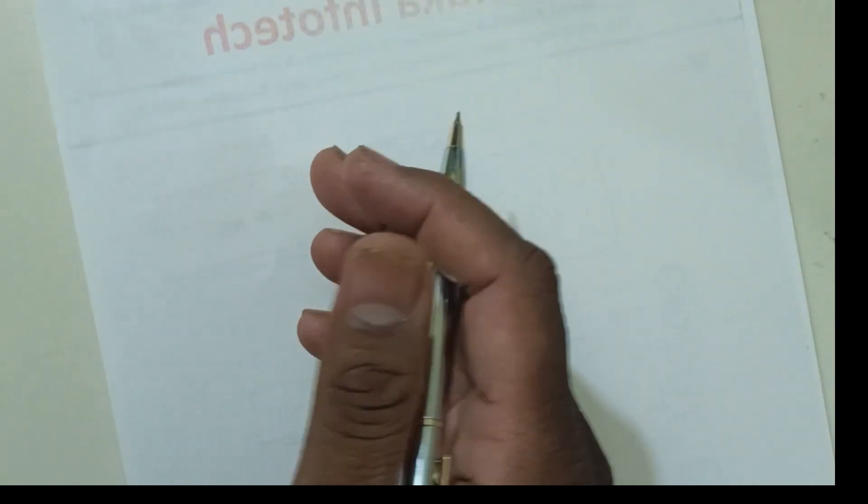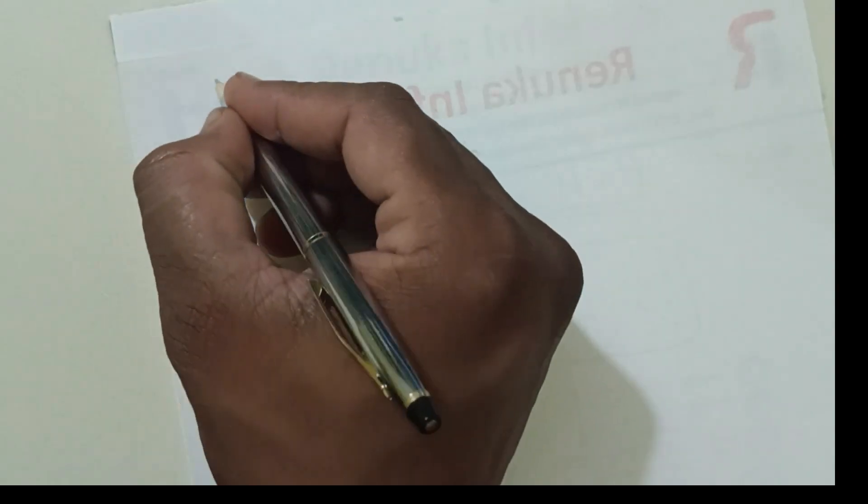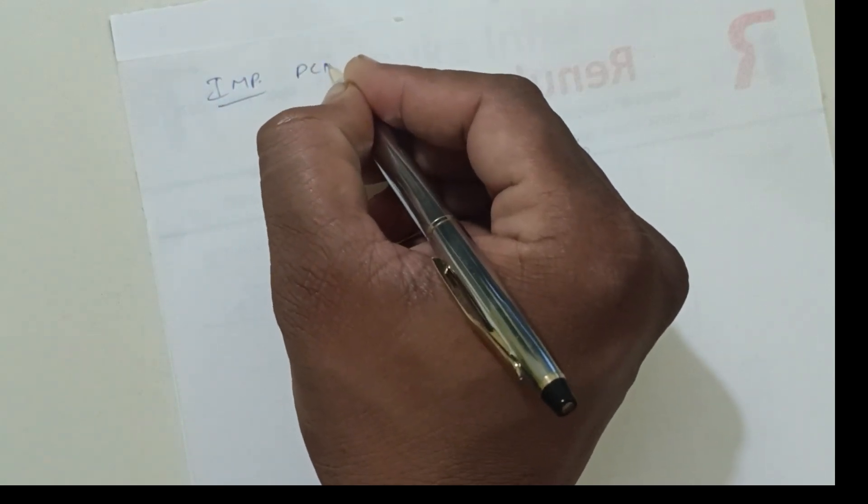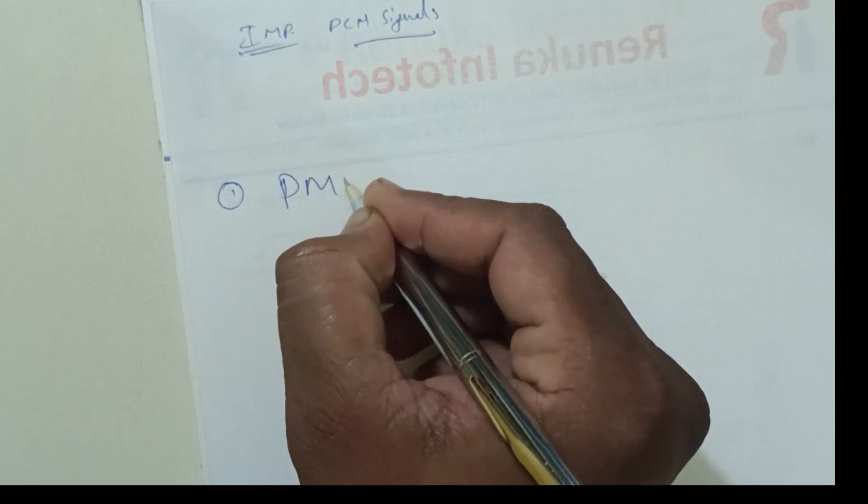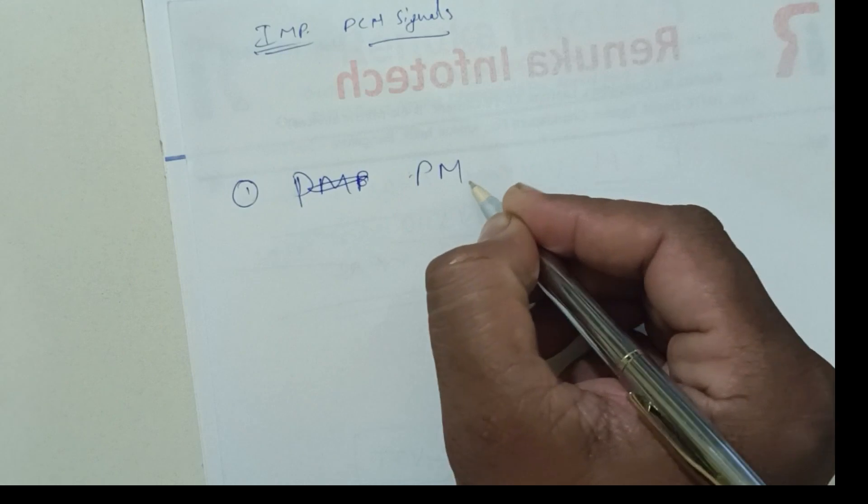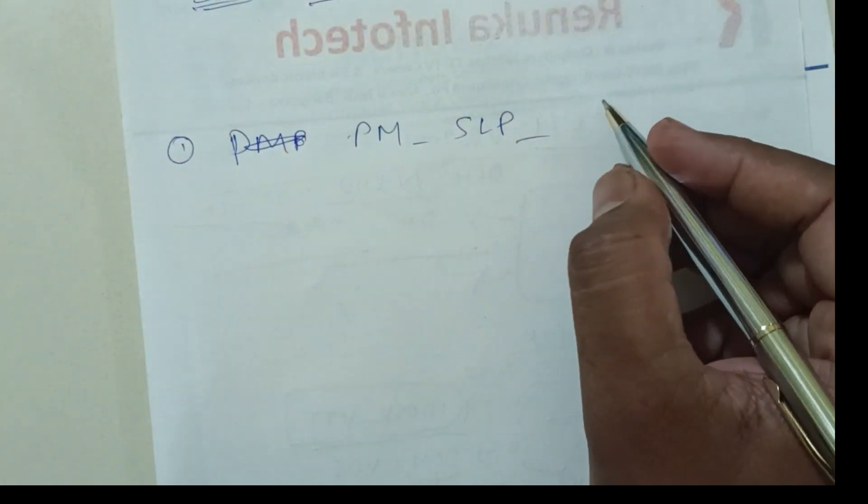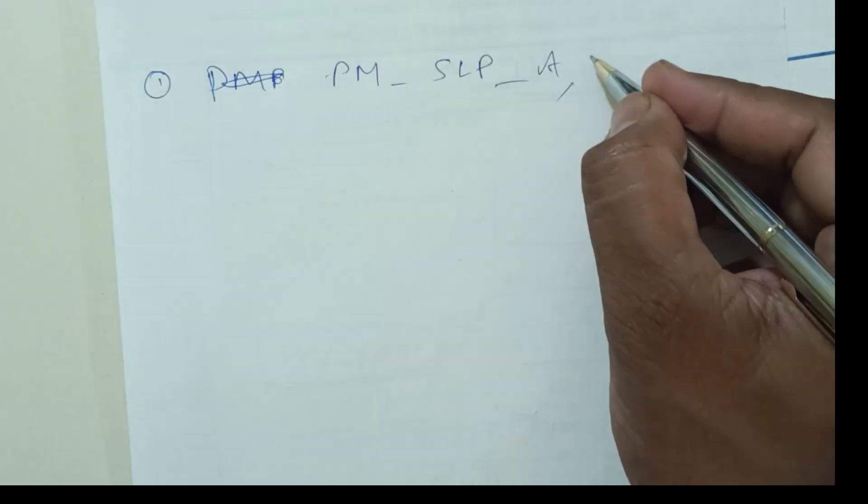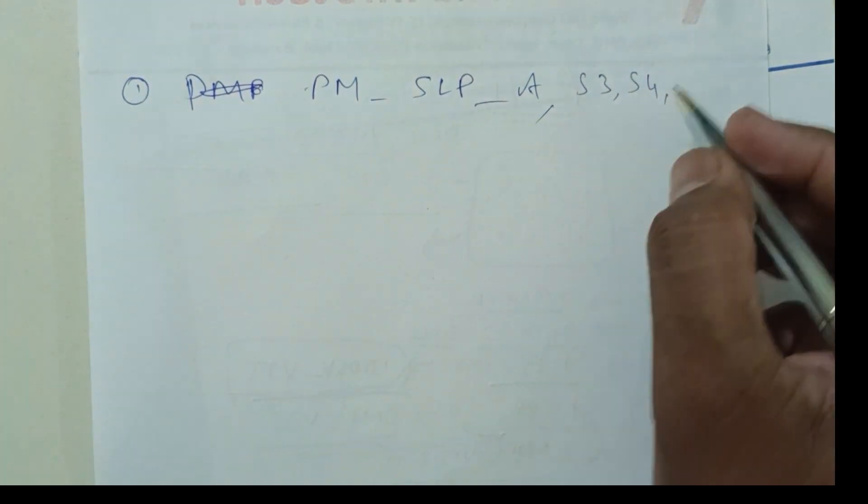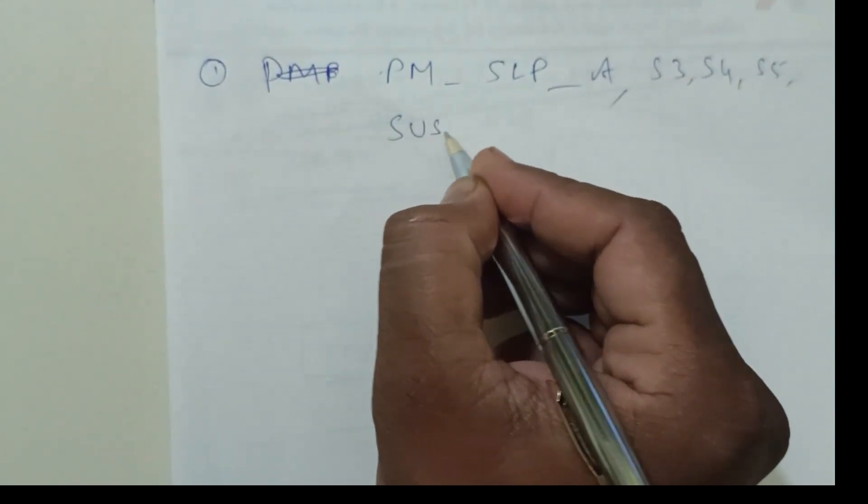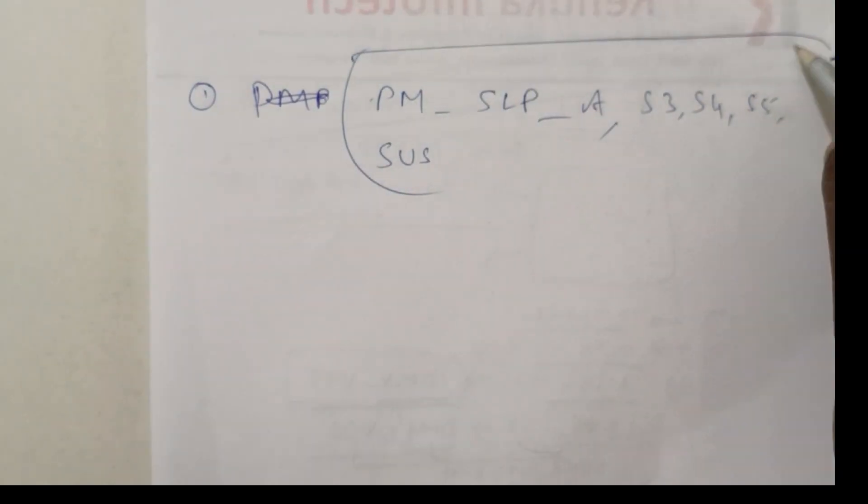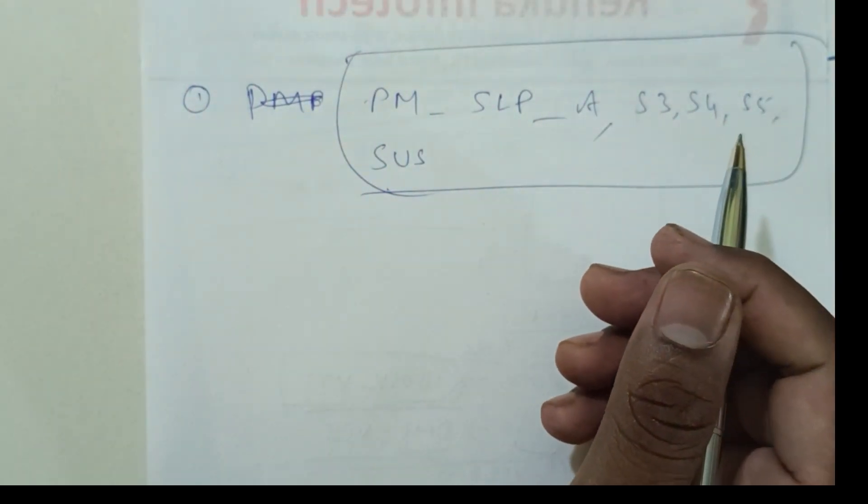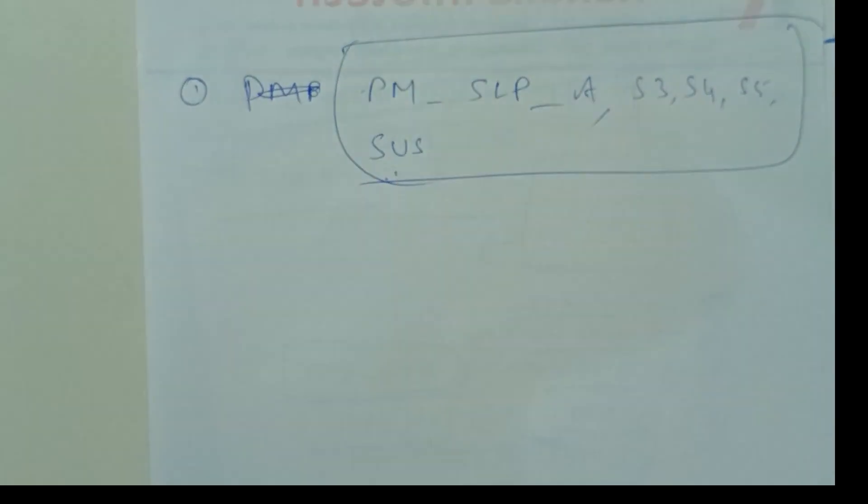Next, what will be there? PCH signals. Important PCH signals. Number one, PM SLP series. One is A, other one is S3, S4, S5. These are very very important to power on the motherboard. I will tell you why it's very important in future, next classes.